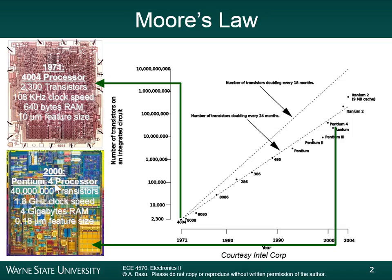Nowadays, back in 2000 it was about 0.18 microns — about 500 times smaller than what they were in the 70s. And nowadays, some of the newest processes, the size of the transistors are about 14 to 20 nanometers — another factor of 10 smaller than what they were in the 2000s. By making the transistors very small, we're able to cram more and more transistors on a chip.